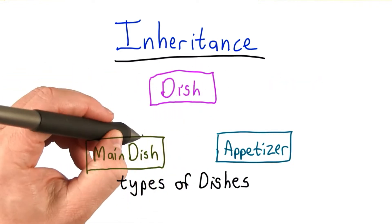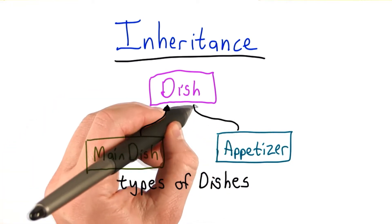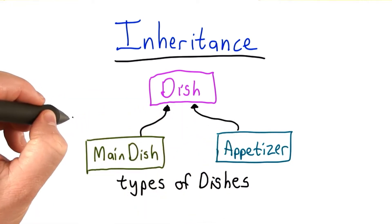That means if we had a dish type, we could create the main dish type by specializing the dish type, and we could create an appetizer type by also specializing the dish type. This is called inheritance.